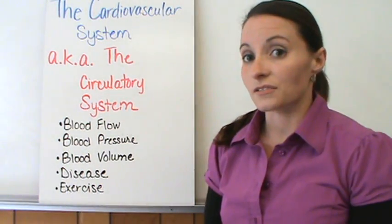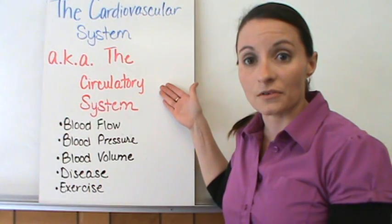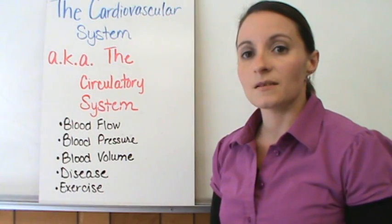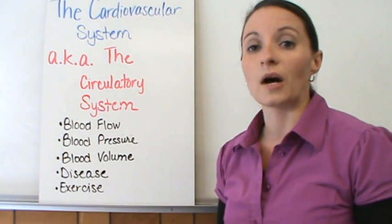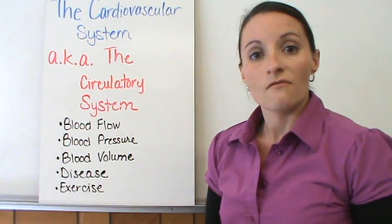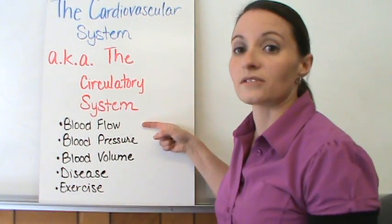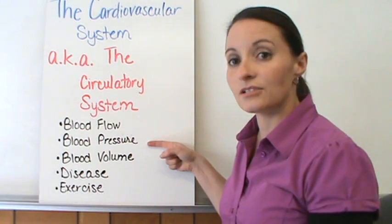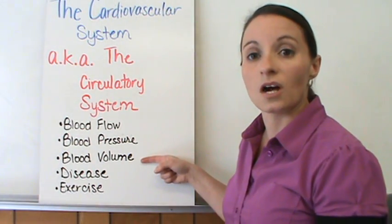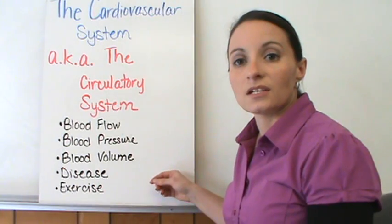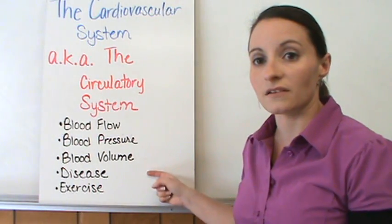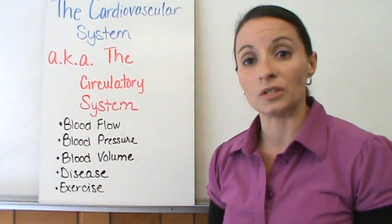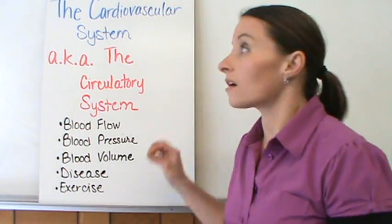Today's lesson is going to be on the cardiovascular system, also known as the circulatory system. We're going to talk about some of the major parts, function, structure, and some of the things that are affected in your body by the cardiovascular system. For instance, we're going to talk about blood flow, what direction it flows, what happens when your blood pressure is too high or too low, different diseases of the cardiovascular system, and how exercise and diet actually help you with the cardiovascular system.